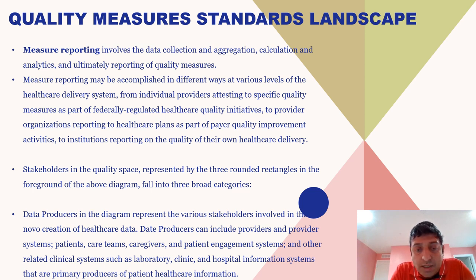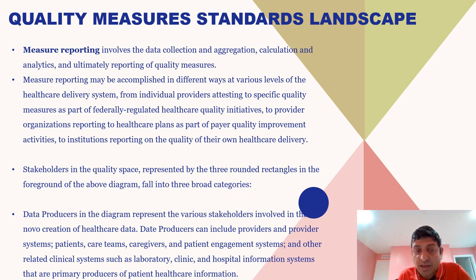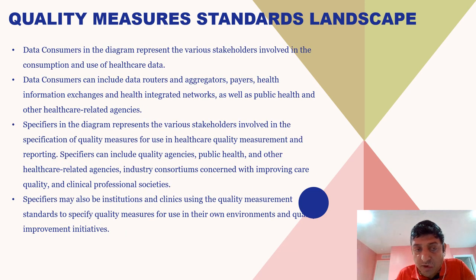Stakeholders in the quality space, represented by the three rounded rectangles in the foreground of the diagram, fall into three broad categories. Data producers represent the various stakeholders involved in the novel creation of healthcare data. Data producers can include providers and provider systems, patients, care team, caregiver and patient engagement systems, and other related clinical systems such as laboratory, clinic, and hospital information systems that are primary producers of patient healthcare information.